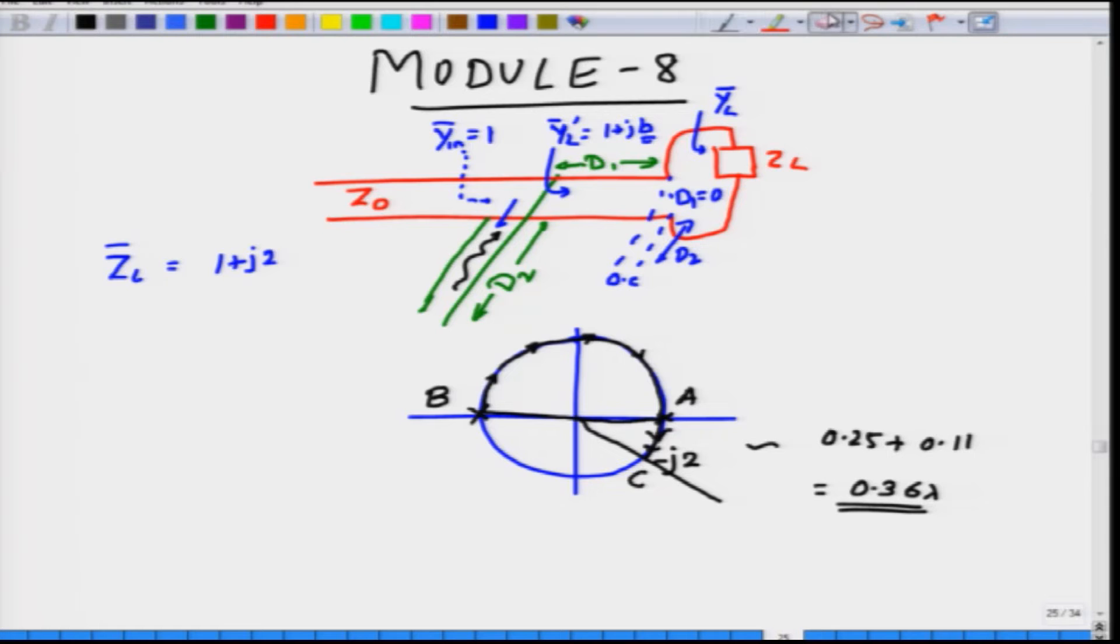Now, if this problem seems very simple to you, let us alter the problem here by making the real part to be different than Z naught. So, let us take the real part to be 0.5 and then I will still keep this as plus J2, the load normalized load impedance there, so that I can find out what would be the distance D1 and D2.